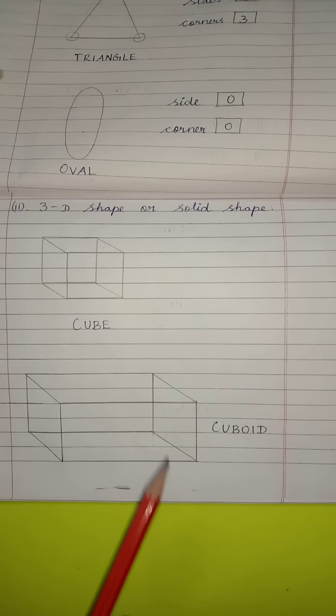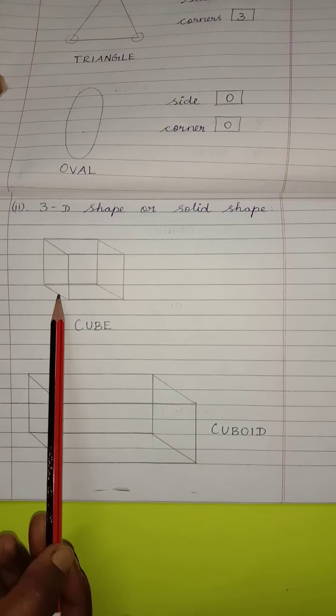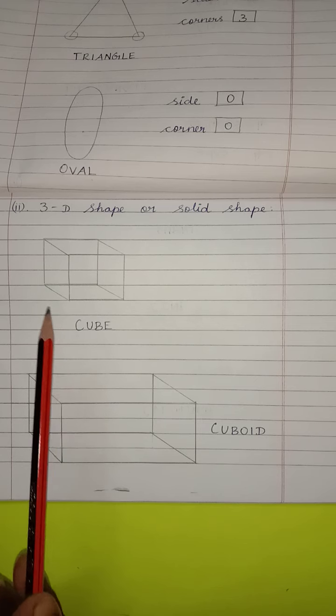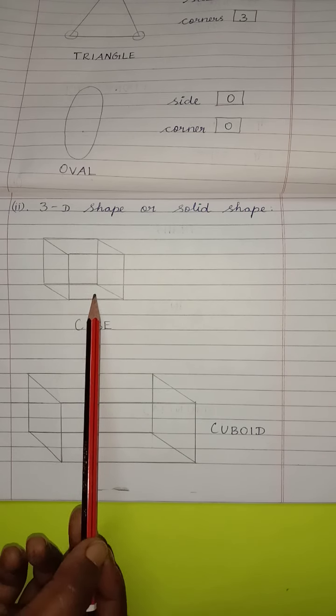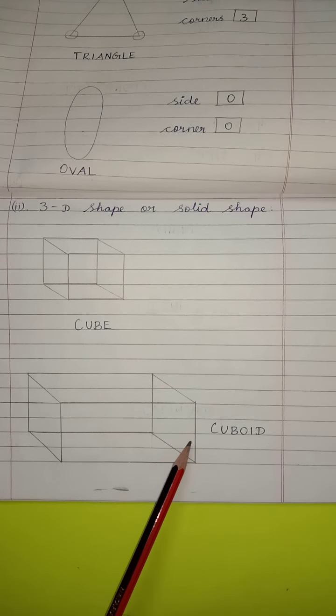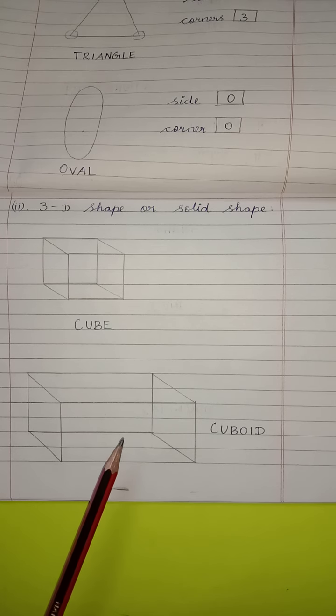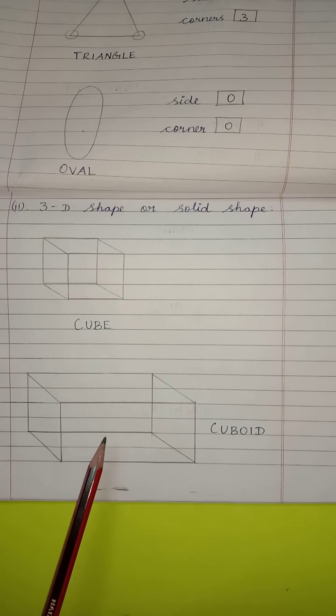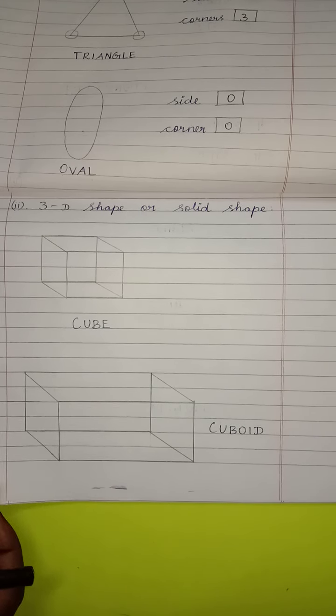Children, in 3D shapes, cube. Cube can slide. Because it has flat surface. And, cuboid also can slide. It also has a flat surface.